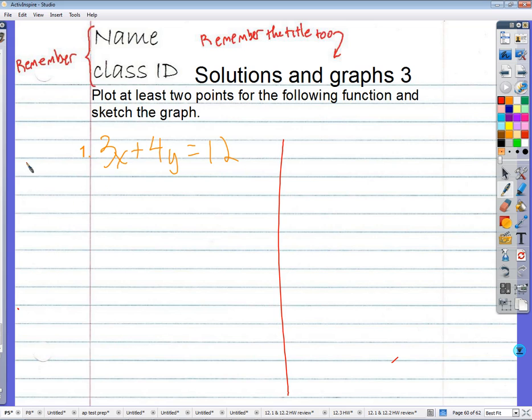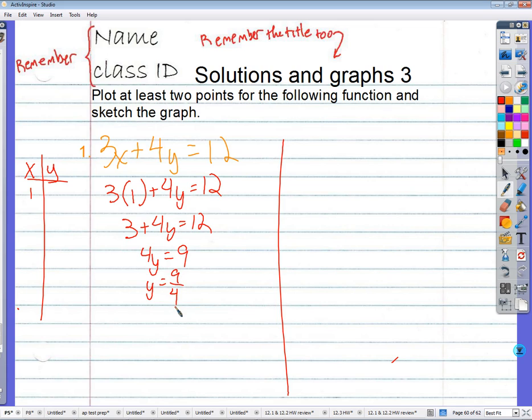Then we'll find out that maybe there's a better way, an easier way. I'm going to put one in there. Why not? Three times one plus four times y equals twelve. Three times one is three plus four y equals twelve. Four y equals nine and y equals nine fourths.